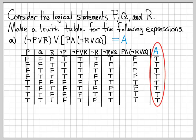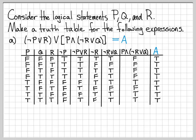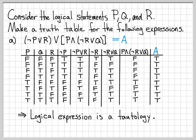Here's the truth table for this logical expression. You tell me the specific combination of P, Q, and R, and I can look it up and tell you the resulting value of the overall expression. This expression is actually a special one because it ends up being true no matter what — so this is actually something we call a tautology, because it's something that is always true.